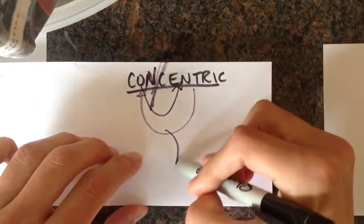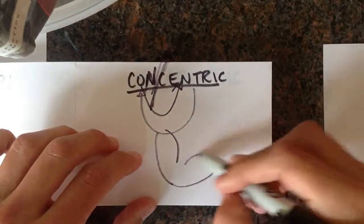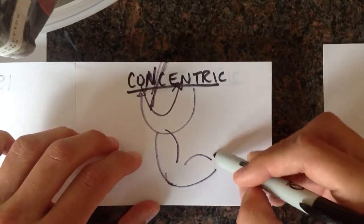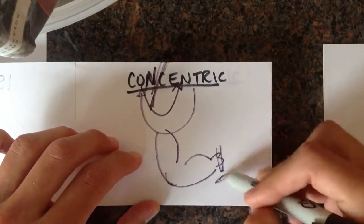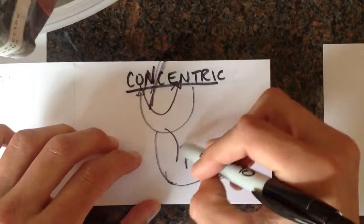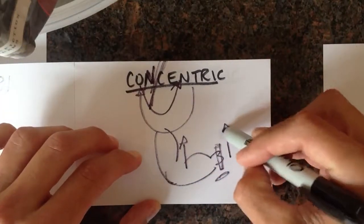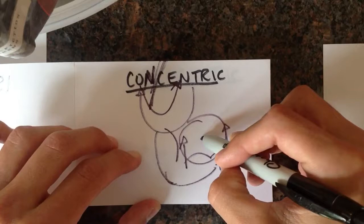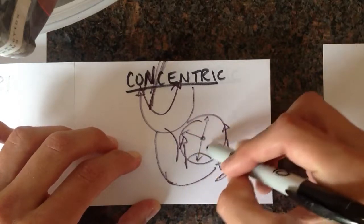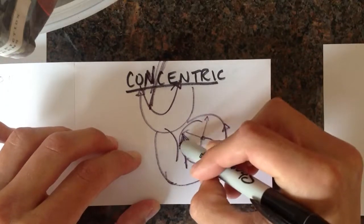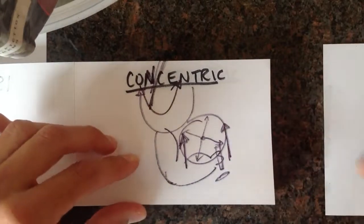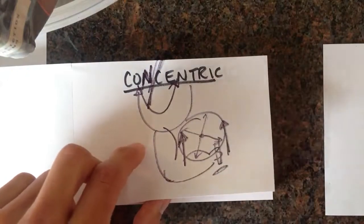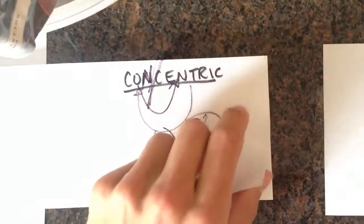This is going to be like the guy doing bicep curls at the gym. He's lifting up, and the weight is going up with him — the center is the same and they're going in the same direction. Remember, this is part of isokinetic, which is synonymous with exercise.